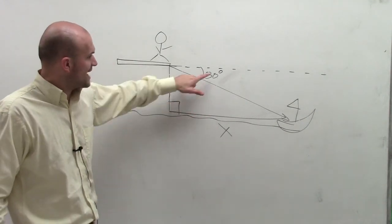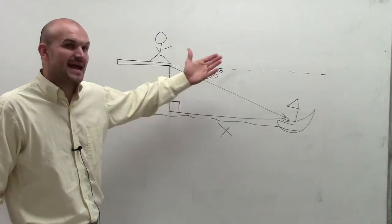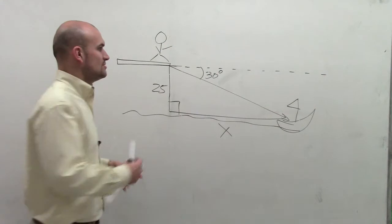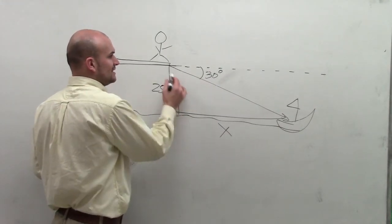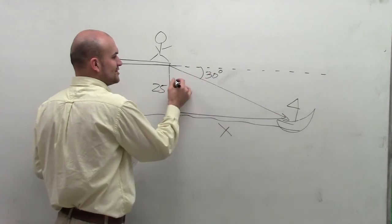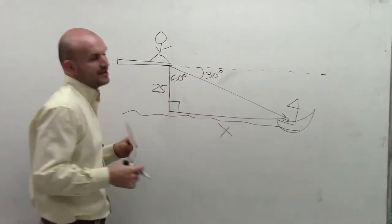Now what I need to do is I have this angle, but right now that's my angle of depression. To be able to work this inside my triangle, if I know this is a 90 degree angle, then this is going to be 90 degrees.